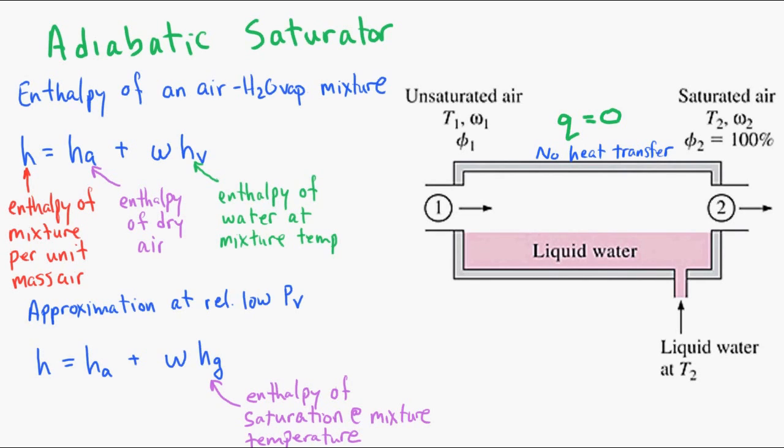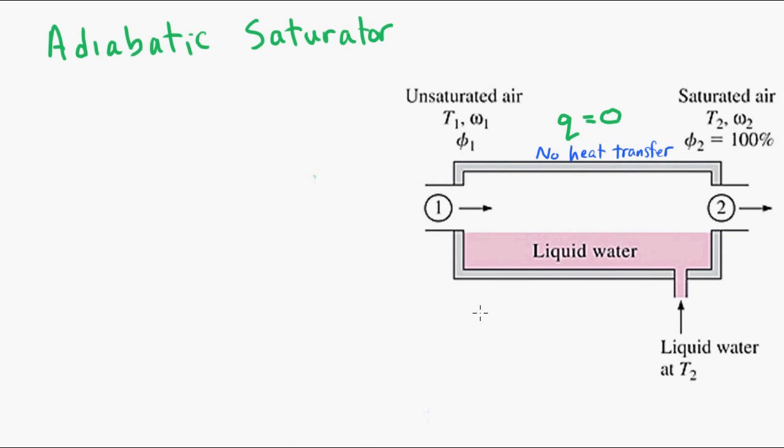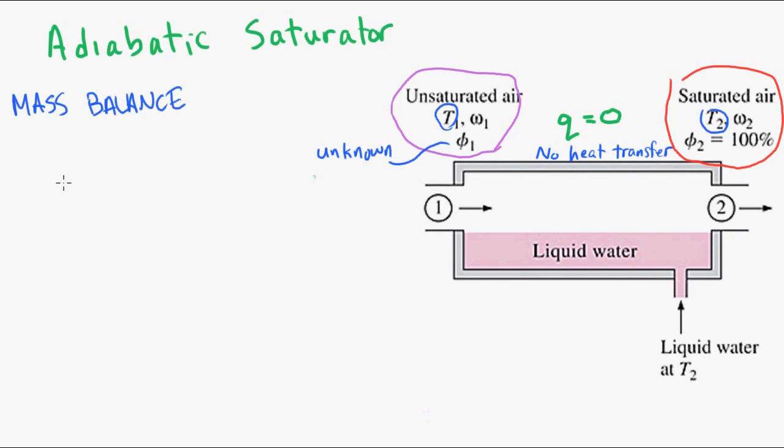So coming back to this adiabatic saturator. The saturator, we're given an initial set of conditions, and at the outlet of the saturator, the relative humidity is 100%. So we're adding water to the system. We know the temperatures at the input and at the output, but the relative humidity at the input is unknown. So to analyze the system, we first do our mass balance.